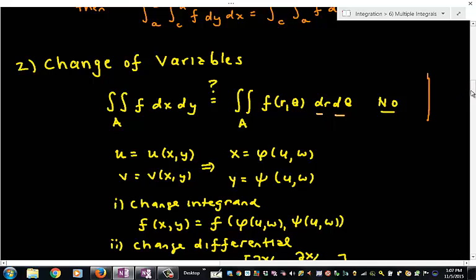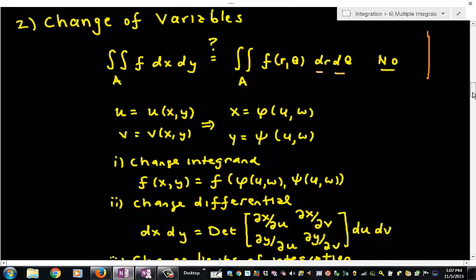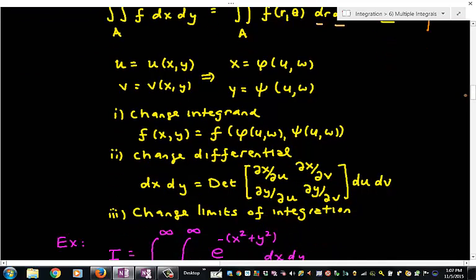Remember what we had to do before when we did the u substitution, which is a change of variables. First we had to change the integrand. This means I'm going to have to solve for x and y in terms of my two variables of integration, u and v. And I'm just going to substitute those in. Usually changing the integrand is not difficult.